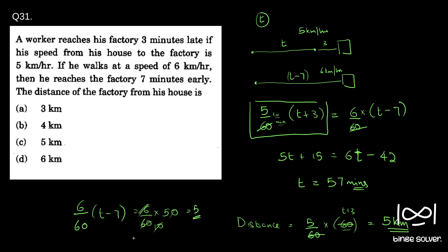Same answer. So we could either use 5 by 60 into t plus 3, or 6 by 60 into t minus 7. That is our choice. Once we find out t, it's fairly simple. So the answer is 5 kilometers. That is the solution to question 31.